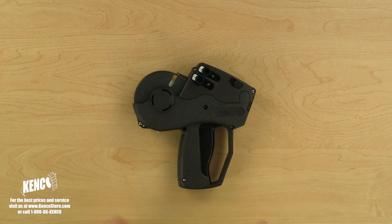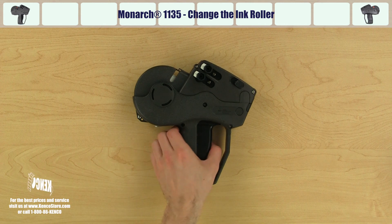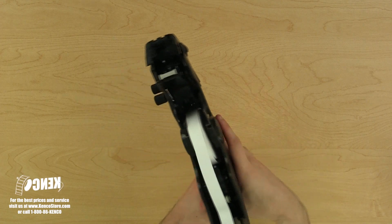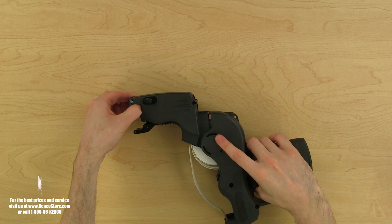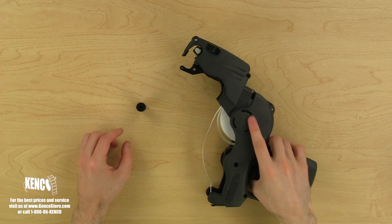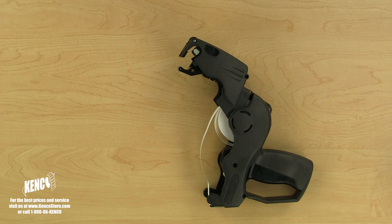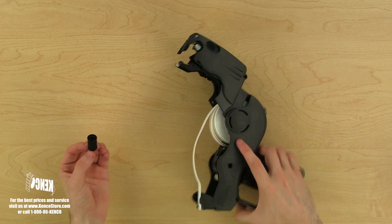Now that we know how to properly load and adjust the Monarch 1135 label gun let's learn how to change the ink roller. The first thing we need to do is open the label housing cover. To release the old ink roller let's press the white button on the side of the ink roller rod. The ink roller should pop right off. Use only the white button to eject the ink roller as pulling the ink roller itself will damage the ink roller locking and ejection mechanism.